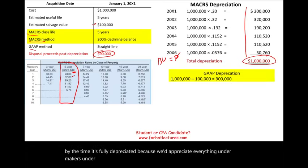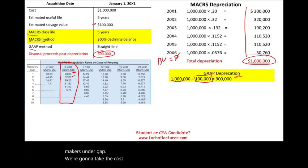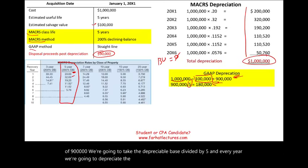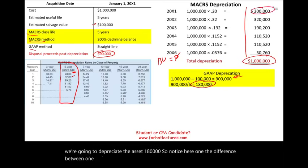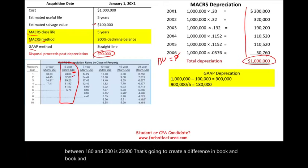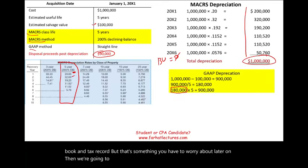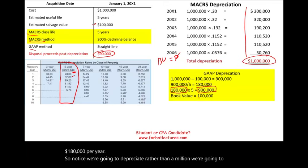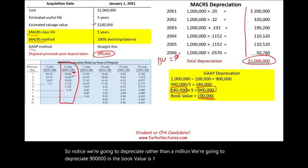Under GAAP, we take cost minus salvage value, giving a depreciable base of $900,000. Divided by five years, we depreciate $180,000 every year. Notice the difference between $180,000 and $200,000 is $20,000 — that's going to create a difference in book and tax records, which you'll deal with later. After five years we depreciate $900,000 and the book value is $100,000.